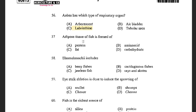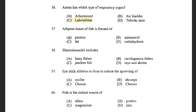Next question: Adipose tissue of fish is formed of — options are Protein, Amino Acid, Fat, and Carbohydrate. The answer is Fat. The adipose tissue is fat cell tissue, also known as adipocytes.